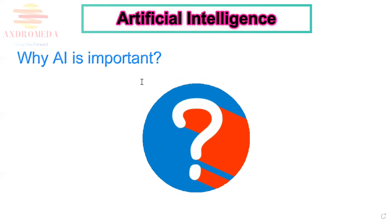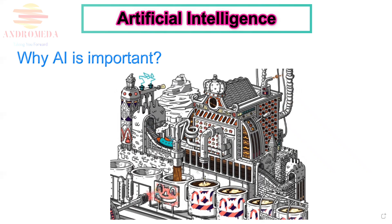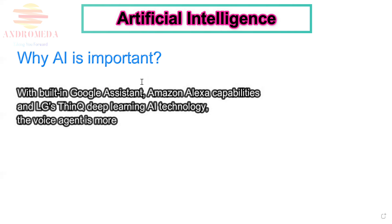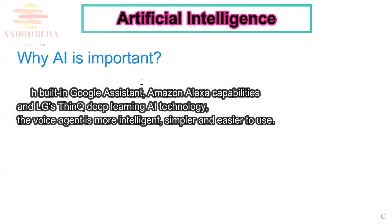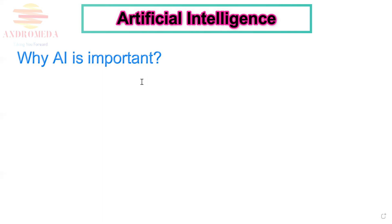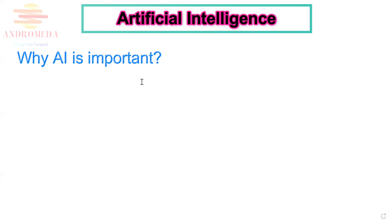Why is AI important? There are so many amazing ways artificial intelligence and machine learning are used behind the scenes to impact our everyday lives. With built-in Google Assistant, Amazon Alexa capabilities, and LG's ThinQ deep learning AI technology, the voice agent is more intelligent, simpler, and easier to use.